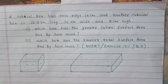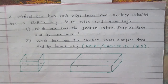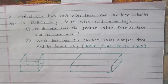A cubical box has edge 10 cm and another cuboidal box is 12.5 cm long, 10 cm wide and 8 cm high. Which box has the greater lateral surface area and by how much? Which box has the smaller total surface area and by how much?